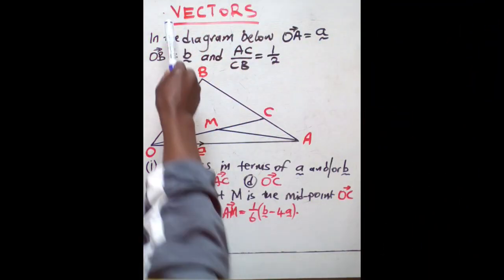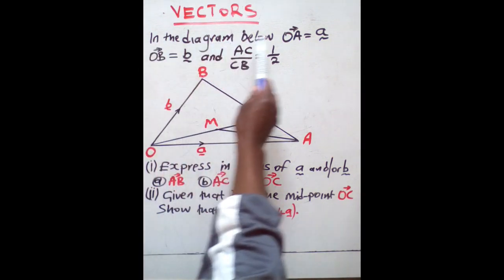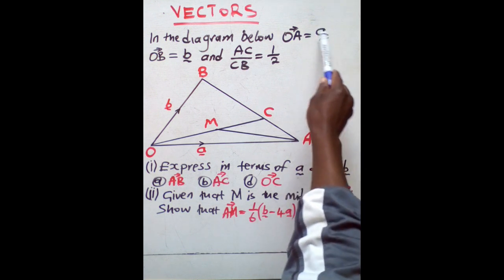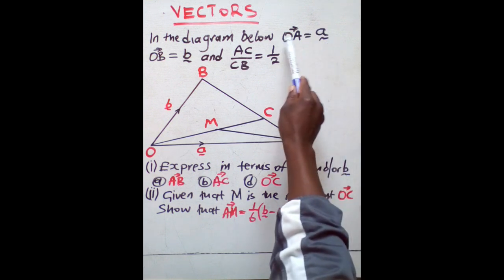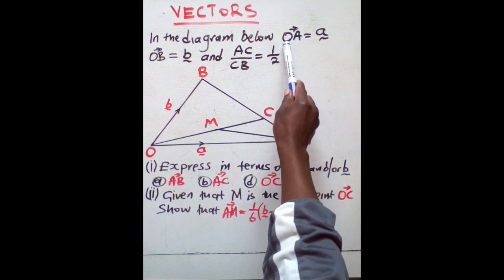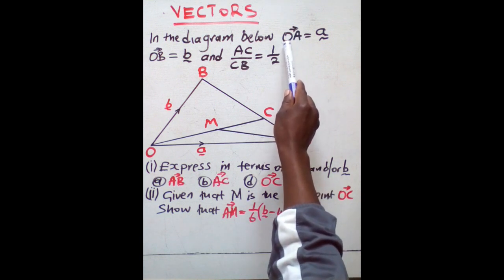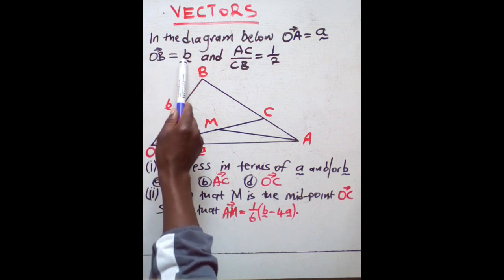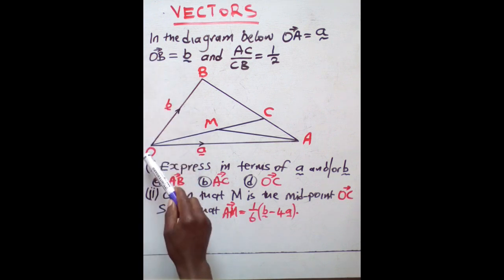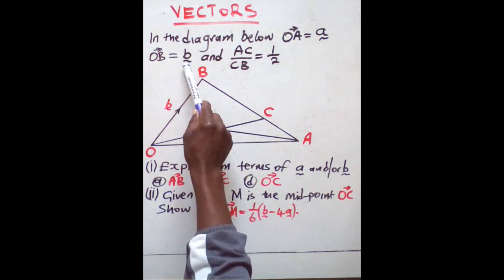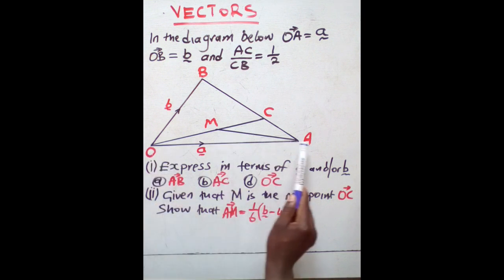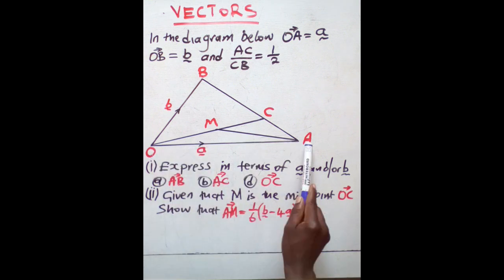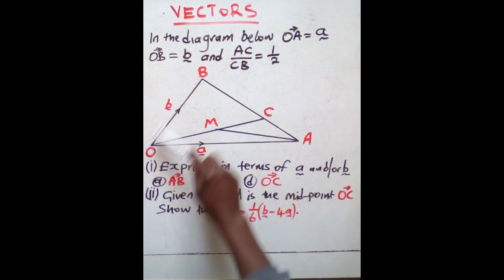This question is coming from a topic called Vectors. In the diagram below, OA is equal to vector a. This is how we denote vector a — you write a small letter then you put a dash. OA has an arrow which shows that you are starting from point O to A. The movement is from O to A, so OA is equal to that vector a.